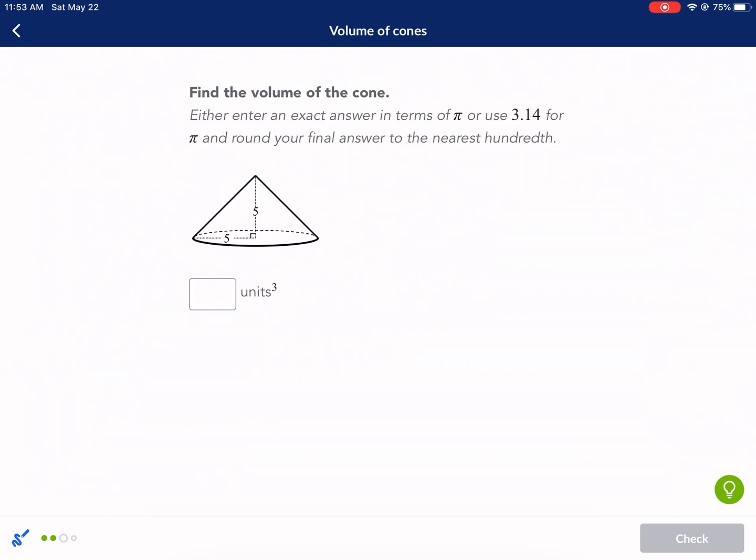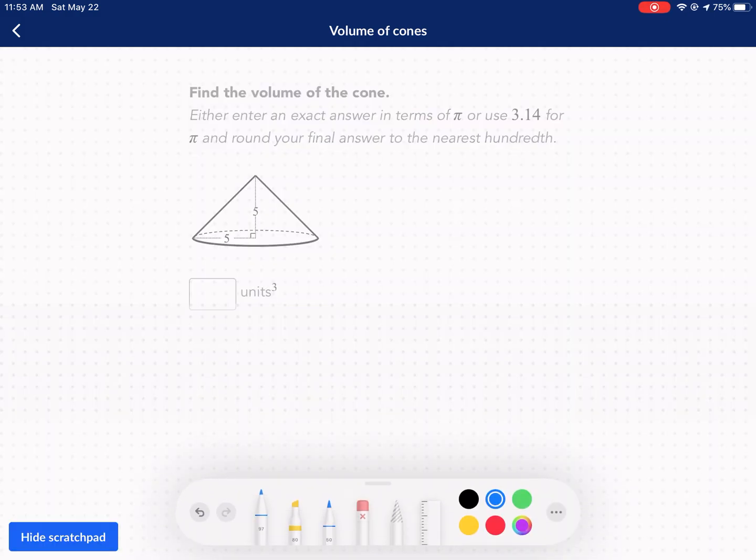Find the volume of the cone. Enter an exact answer in terms of pi or 3.14. So let's highlight what we need. Here's our radius. Here's our height again. If it gave us the slant height and the radius, we could easily find the height by using Pythagorean theorem. Just so you know. In case you're like, oh my gosh, what do I do? That's what you do.